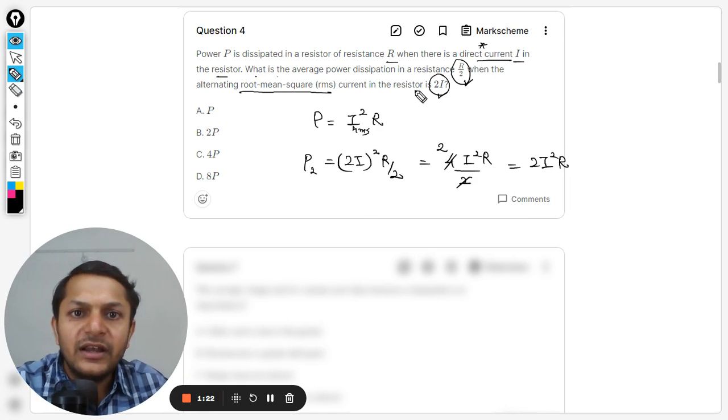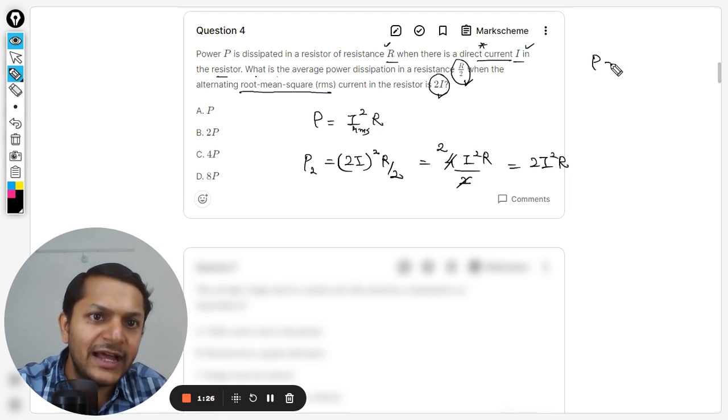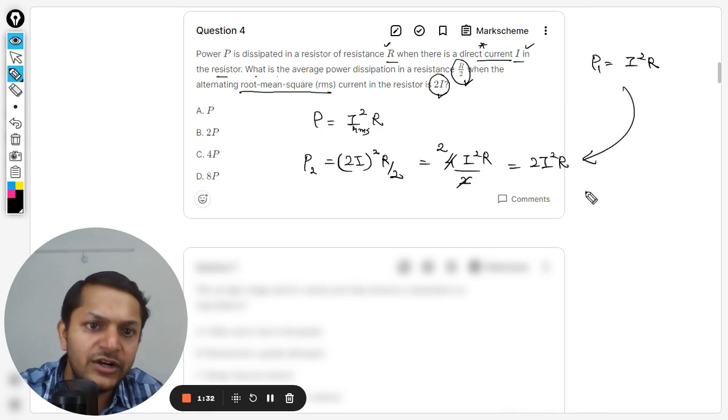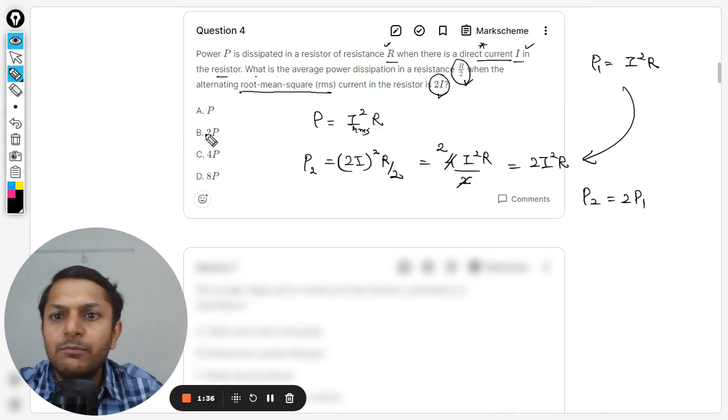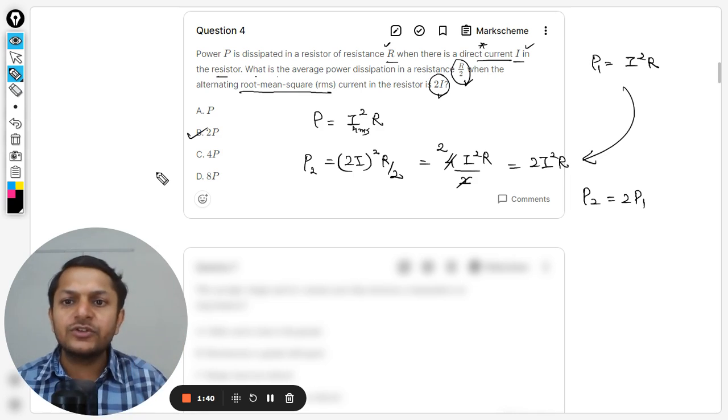But earlier he was saying that the direct current is I and the resistor is R, so at that time P1, the power, was I square R. We can just substitute this value here. It means that P2 is equal to twice of P1. The answer this time will be 2P.